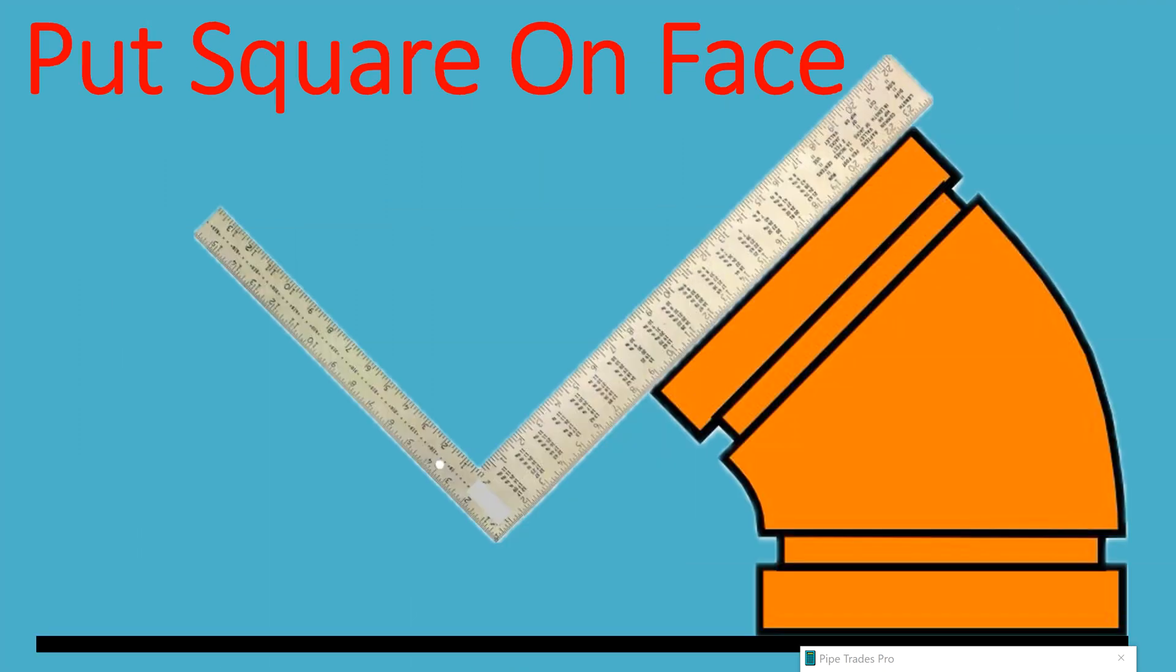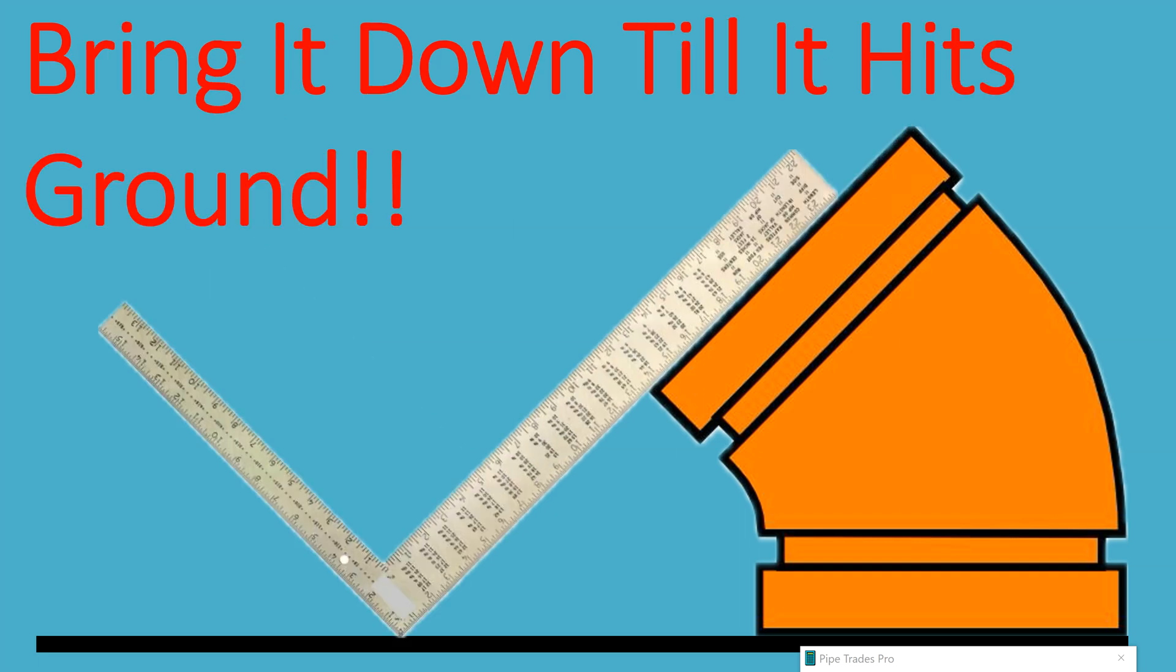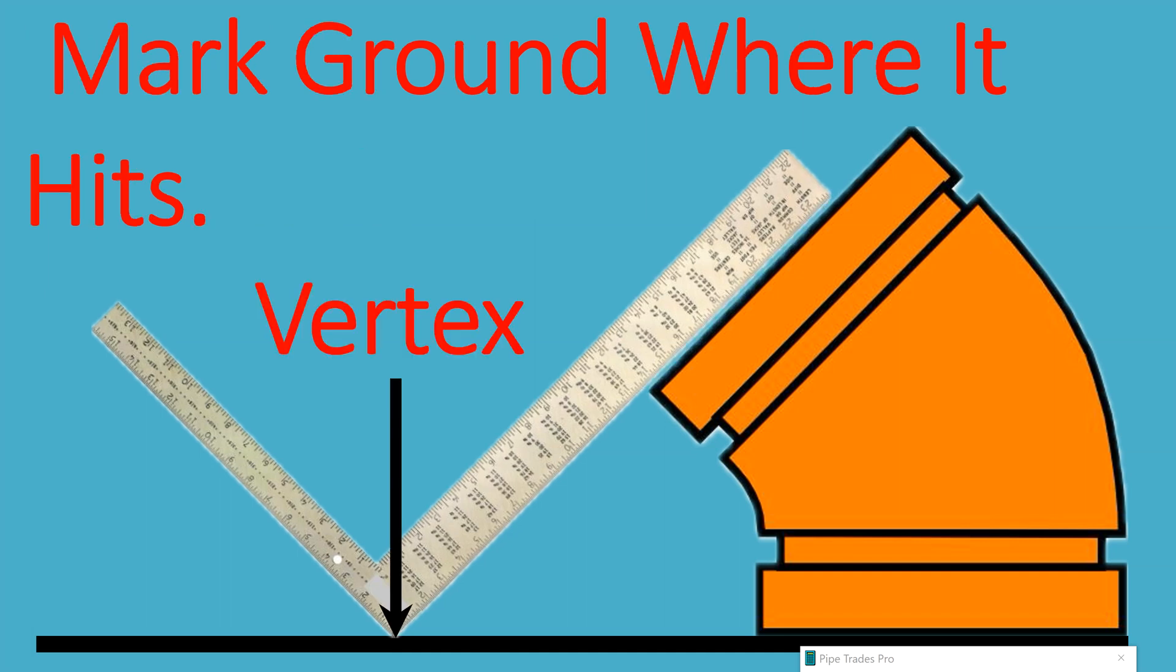Put the square on the face of the fitting, as you can see. The fitting's on the flat ground. And we're going to take the square and we're going to bring it down until it hits the ground, flat table, or whatever we're at. Bring it down until it hits the ground. From this point on, don't move the fitting, and you'll see why.